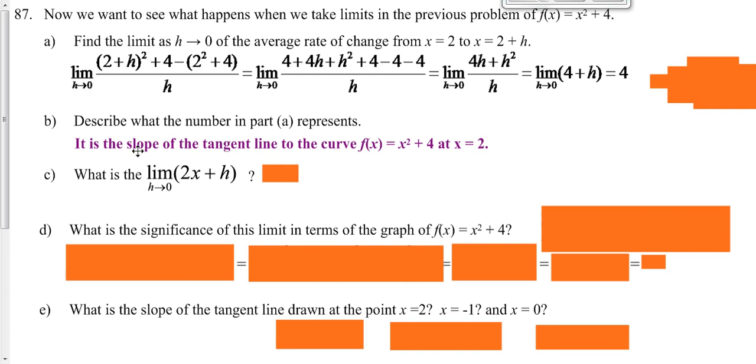That tells us the slope of our tangent line to our curve at x equals 2. In other words, at x equals 2 on this curve, our slope is 4.